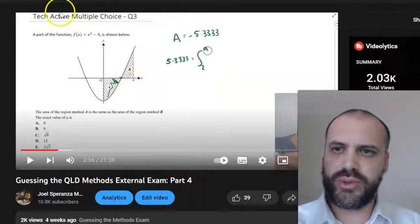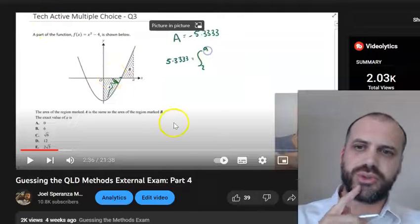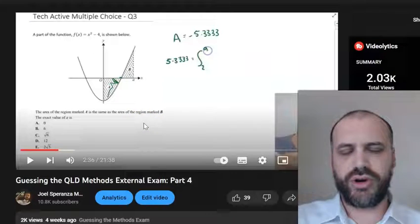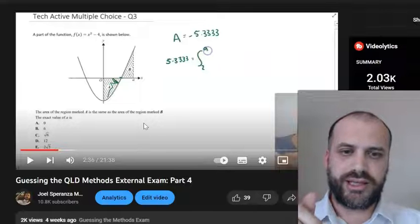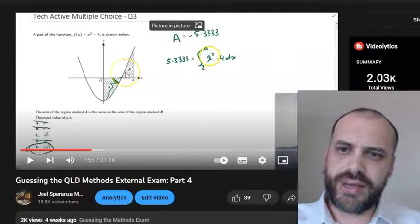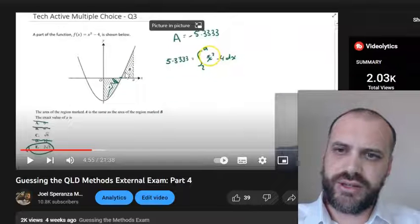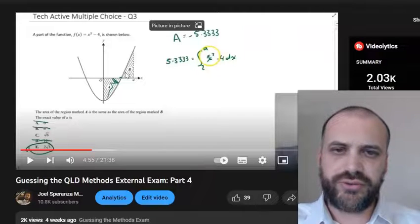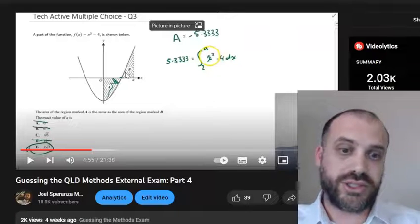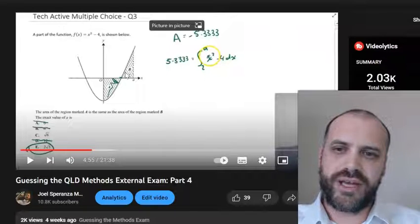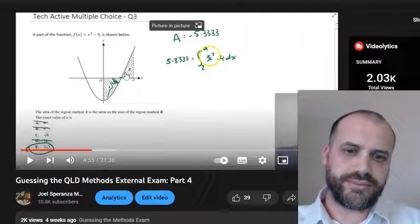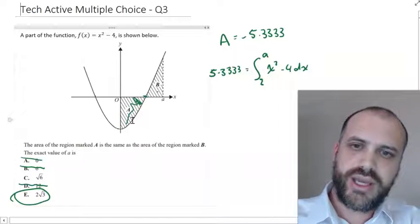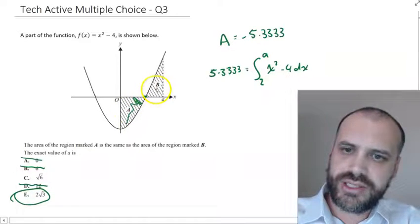We now move on to part four. So it's question three, tech active, multiple choice. This question here, it's an interesting kind of one because I've gotten to the right answer, but I've moved really slowly to get there. Basically, I found that intersection point. Then I found the area of A, negative 5.33, and then I solved for 5.33 between the intersection, which was 2, and that value of A, and found that value of A, which was 2 root 3.